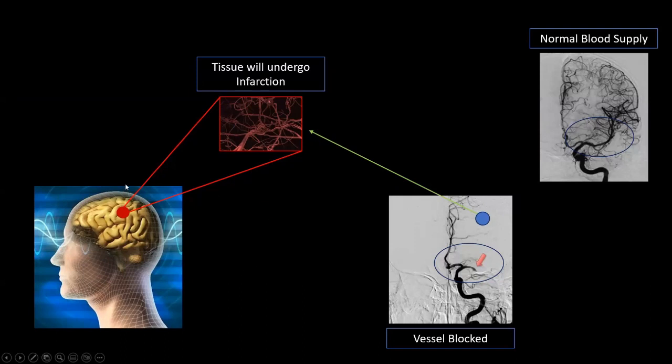But look at this example. See the DSA image. The middle cerebral artery is completely occluded. You can see the normal blood supply in this particular image. Ideally, it should be like this. But here, the M1 segment of MCA is blocked due to thrombus. Because of this, the brain tissues are not getting blood supply. If blood supply is not there, it means it won't get oxygen and other nutrients. Therefore, what will happen? This tissue will undergo infarction. Or we can simply say that these tissues will die.